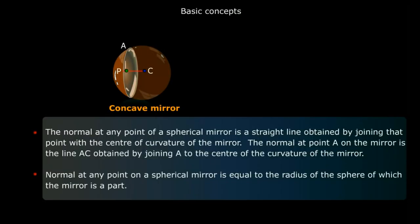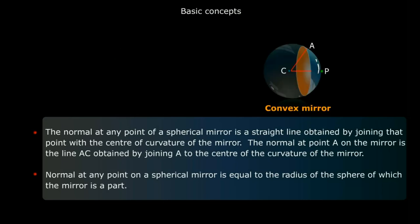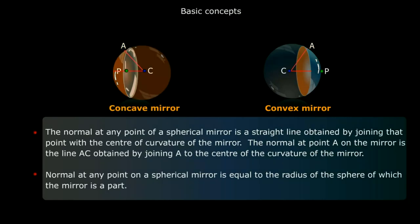The normal at any point of a spherical mirror is a straight line obtained by joining that point with the center of curvature. The normal at any point on a spherical mirror is equal to the radius of the sphere. For example, AC is the normal at point A in both the concave and convex mirrors.